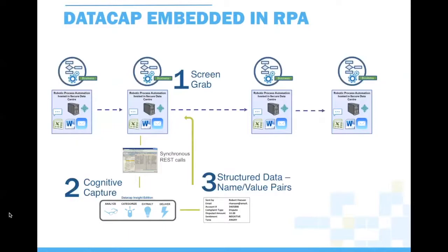The second use case is DataCap embedded in the RPA process, where RPA is actually managing the process. A document might come into the robotics process — perhaps a bot does a screen grab of an email or a fax — and then RPA sends that document to DataCap in a more transactional nature. DataCap then categorizes and extracts, producing a very structured data layout, and hands it back to RPA to continue on with their process. Those are the two big use cases for DataCap and RPA that we're seeing.